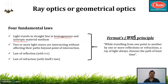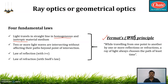The third law is the law of reflection, and the fourth involves Snell's law of refraction. I will explain these in detail in the following videos. The combination of all these four laws leads to Fermat's principle: while traveling from one point to another, by one or more reflections or refractions, a ray of light always chooses a path of least time.